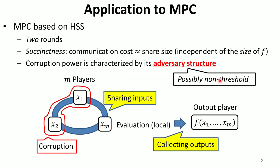Homomorphic Secret Sharing has a direct application to multiparty computation. Consider the following multiparty computation protocol: the m input players distribute shares of their secret input using a homomorphic secret sharing scheme, and then each player locally runs the evaluation algorithm on their received shares. Finally, an output player collects all the outputs of the evaluation algorithms and recovers the value of the function. An important feature of this protocol based on an HSS scheme is that it only needs two rounds of communication: the first is sharing inputs and the second is collecting outputs. It also has succinctness, meaning that its communication complexity is proportional to the share size, independent of the complexity of the function.